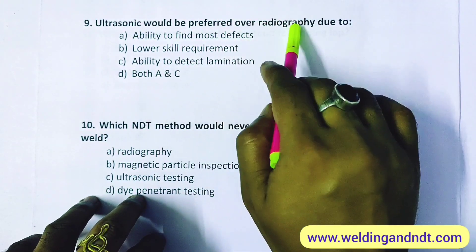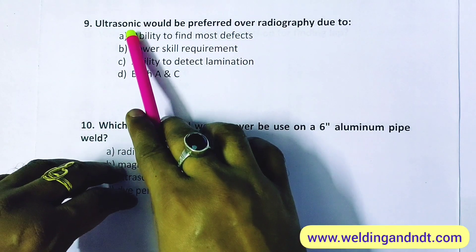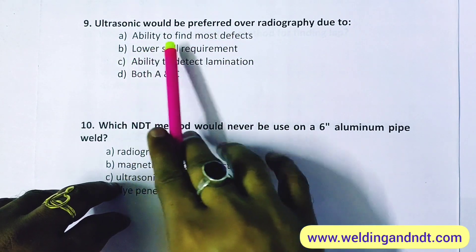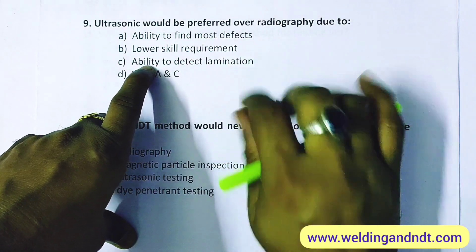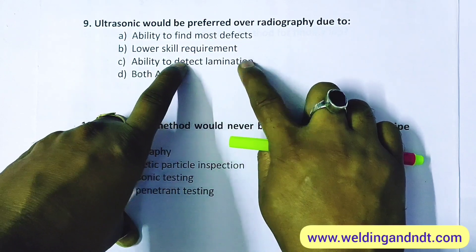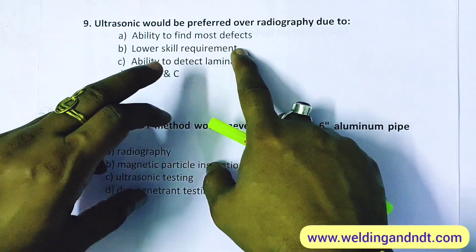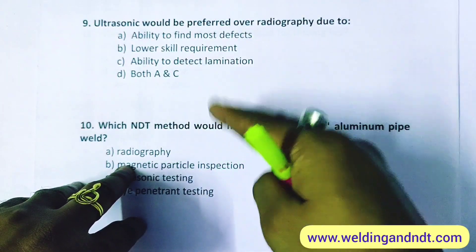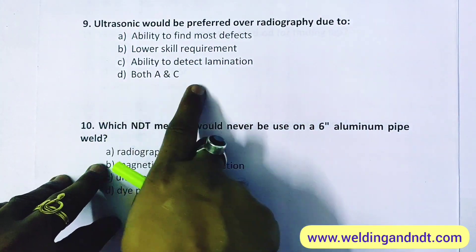Question 9: why would ultrasonic be preferred over radiography? The options are ability to find most defects, lower skill requirement, and ability to detect lamination. Lower skill requirement is incorrect — ultrasonic testing requires very high operator skill. Ability to find most defects — yes, ultrasonic testing can detect more defects than other NDT methods. Ability to detect lamination is also a major advantage. So the answer is D — both A and C.